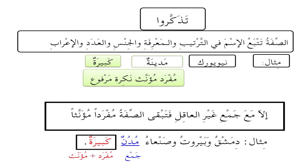Look at the example we have: New York مدينة كبيرة. كبيرة follows in order — it is indefinite like مدينة, it's feminine like مدينة, it's singular like مدينة, and it also takes two ضمّة at the end marking its إعراب to tell us what function it has in the sentence: مفرد مؤنث نكرة مرفوع.